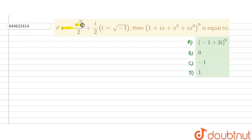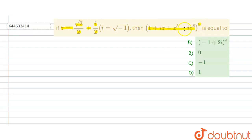Hello students, the given problem is: z equals √3/2 + i/2, where i = √(−1) is iota. Then find the value of (1 + iz + z^5 + i·z^8)^9.